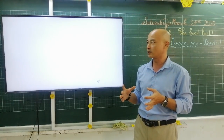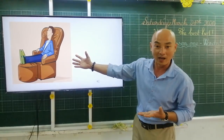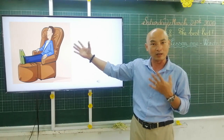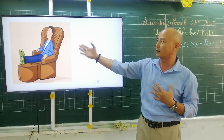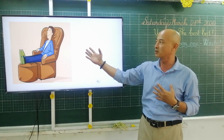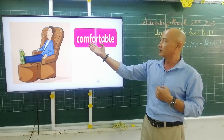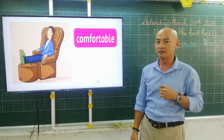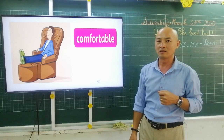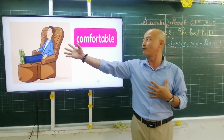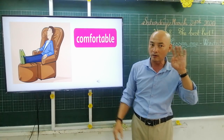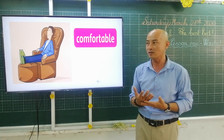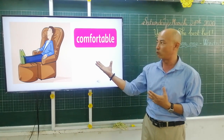We have some words already, and now there's an exciting picture — this man is sitting on a very relaxing sofa. So we can call this: comfortable. Listen and repeat: comfortable. Once more: comfortable. This sofa is very comfortable. Now I'd like to listen to you: comfortable. Okay, that's it!